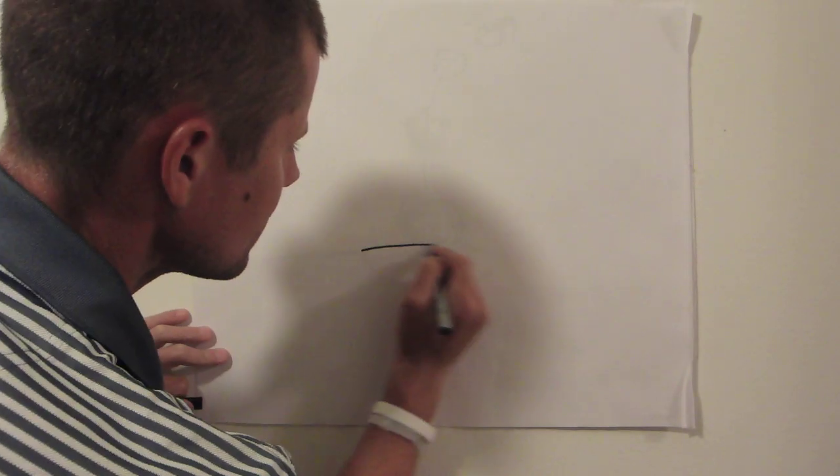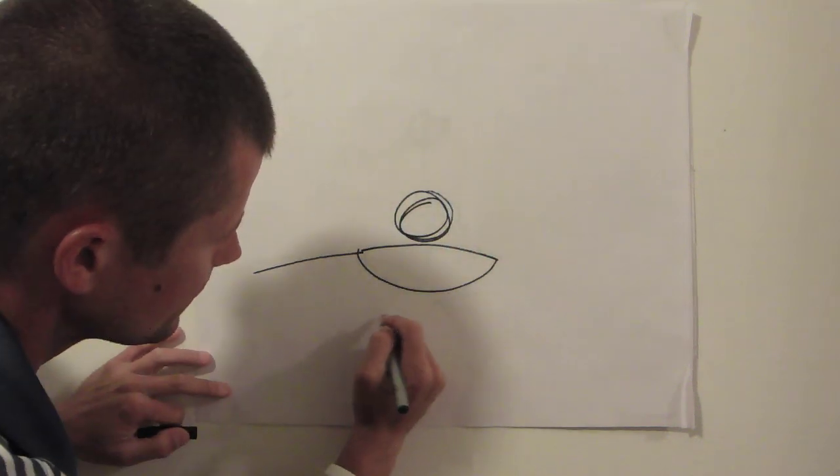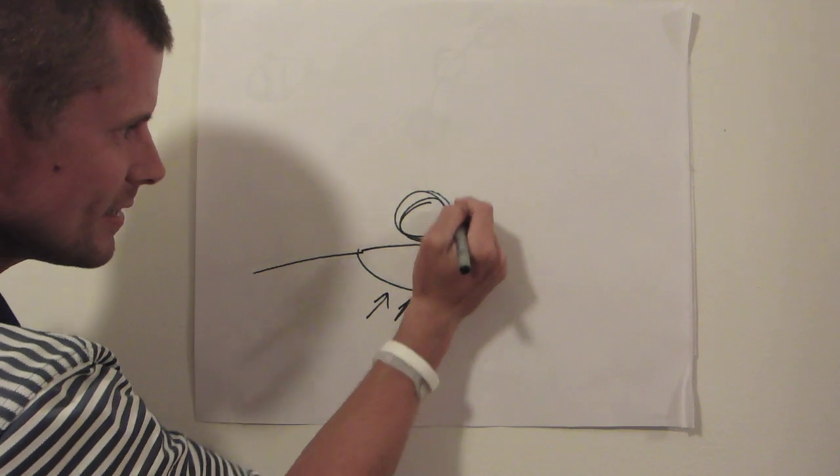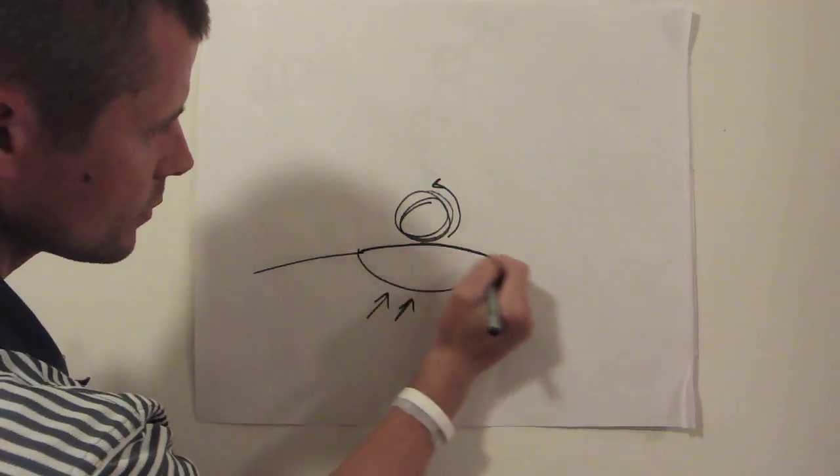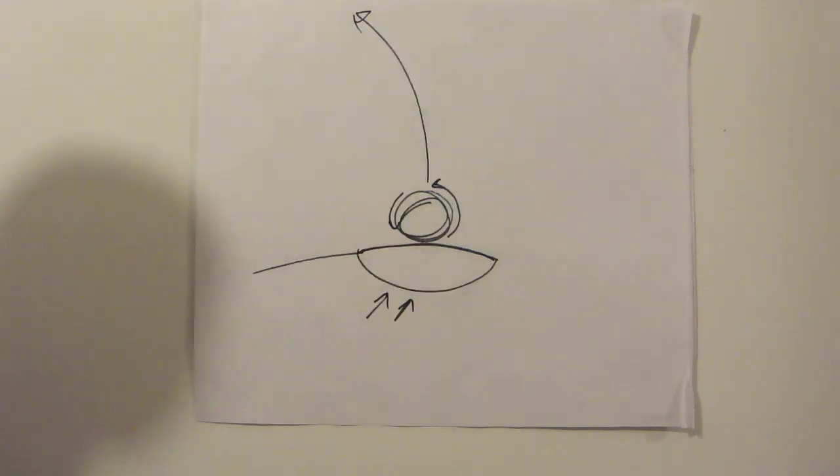He said, okay, well then this time I'm going to swing with the path of my club coming from here. And I said, yeah, you should do that. Ideally you swing from there. The face is square to the target. You're going to put some spin on it. It's going to go like that. And he said, okay, let's see if this works.